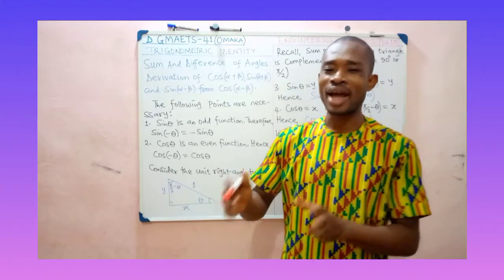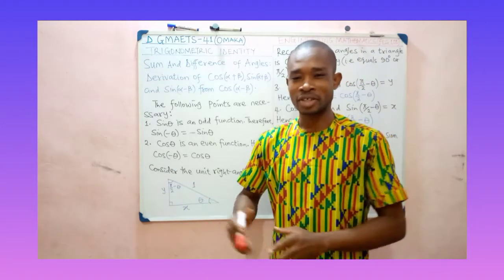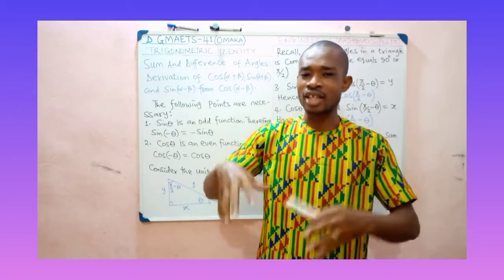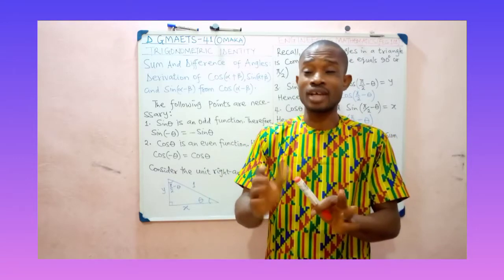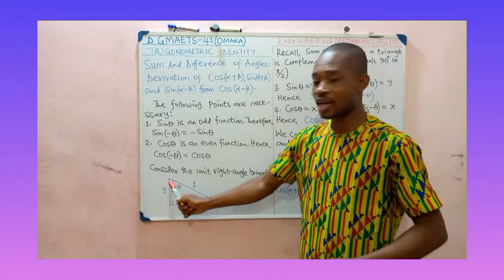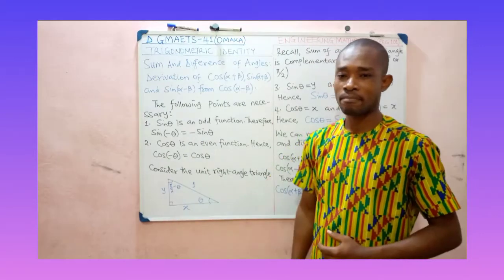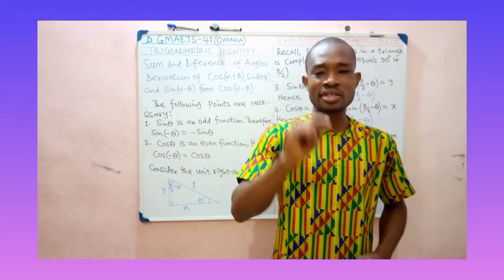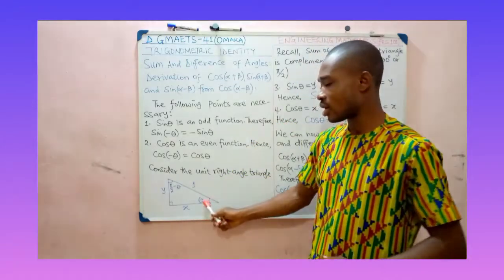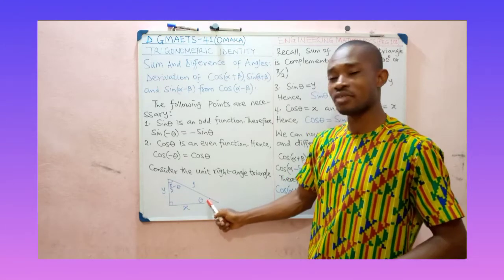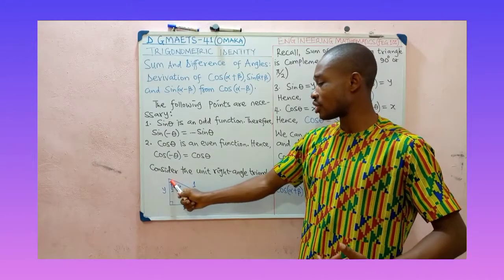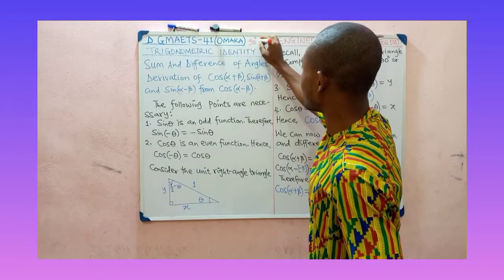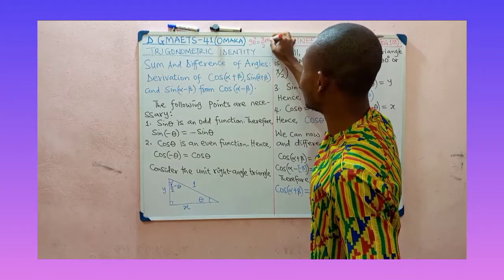We want to go back to our unit right angle triangle. The two acute angles are complementary — if you add both of them, they equal 90°. We previously derived that sin θ = y and cos θ = x. Now, 90° is the same as π/2 radians. Take note of that.